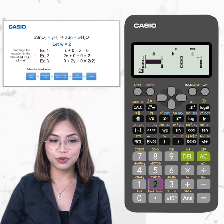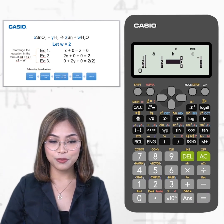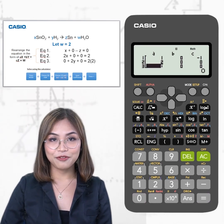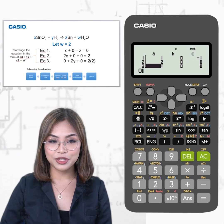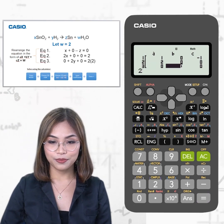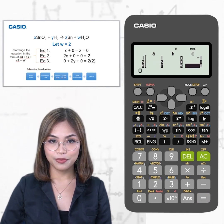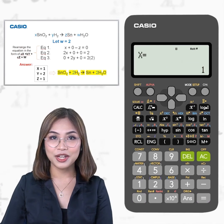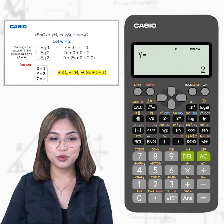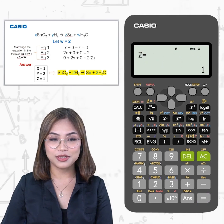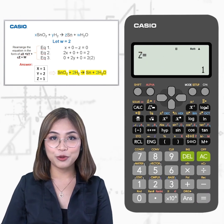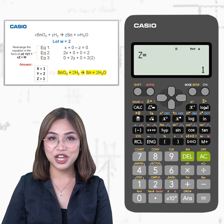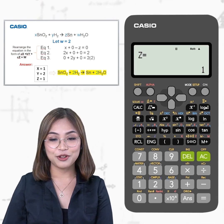For equation 2, we have 2, 0, 0, and 2 on the right side. And for equation number 3, we have 0, 2, 0, and 4. By pressing the equal sign, we will get x equals 1, y equals 2, and z equals 1. And of course, including our initial value of w equals 2, this becomes the coefficient of our balanced equation as shown here.